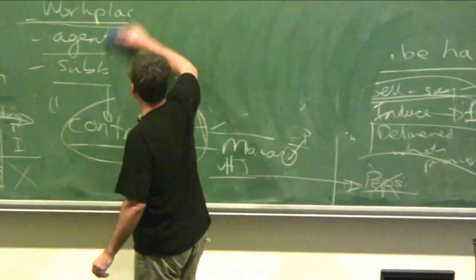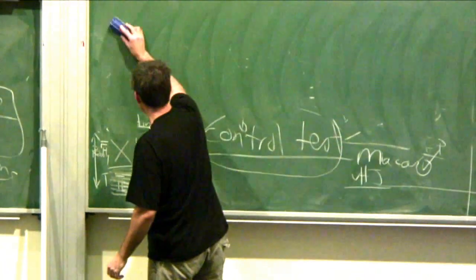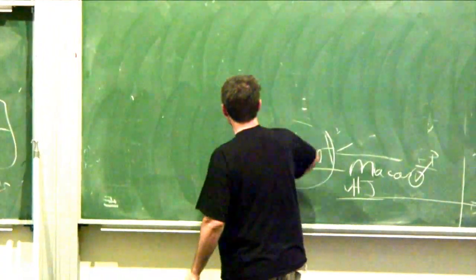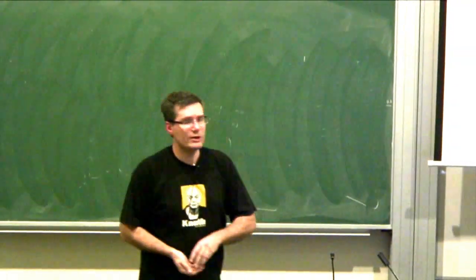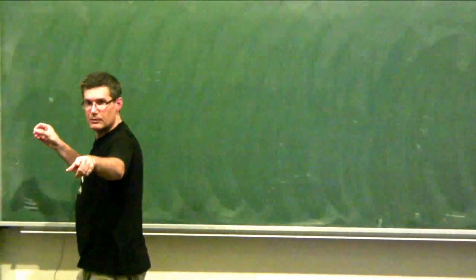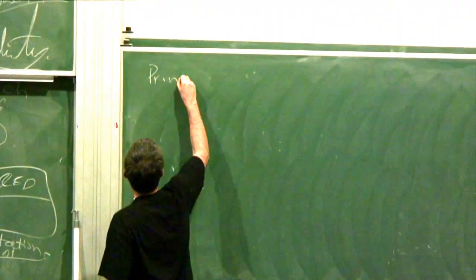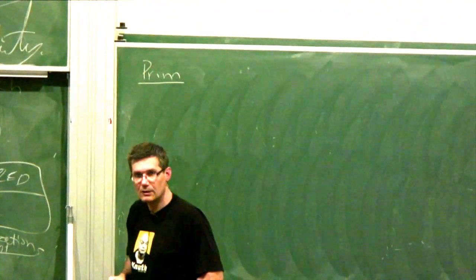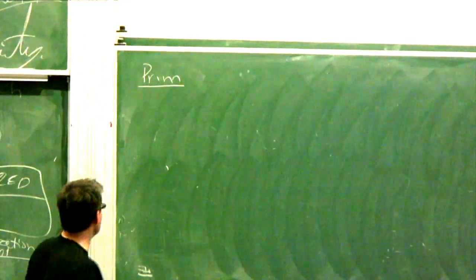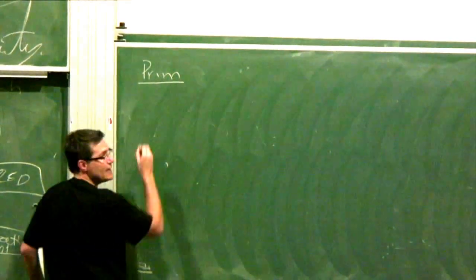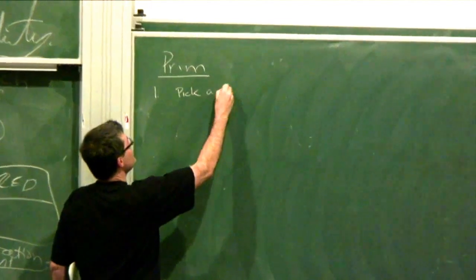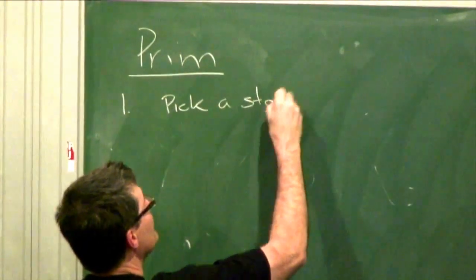Last time we spoke, we saw Prim's algorithm for calculating a minimum spanning tree. Does anyone remember how Prim's algorithm works? Pick a node, pick a start.